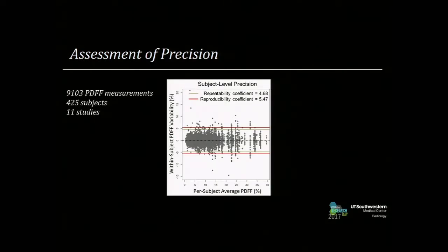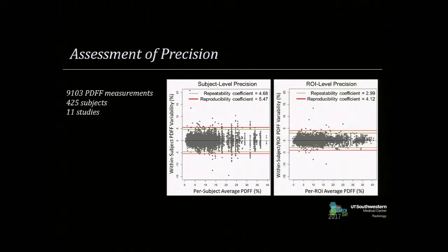For precision, we had over 9,000 PDFF measurements. Plotting per-subject variability against per-subject average PDFF, the repeatability coefficient is about 4.7% and the reproducibility coefficient is about 5.4%. Fatty liver is a heterogeneous disease. Looking at per-ROI level precision, the data becomes even tighter — a repeatability coefficient of about 3% and a reproducibility coefficient of about 4%. The tan line and the red line are very close to each other, indicating that technical variability within the data is not very much.